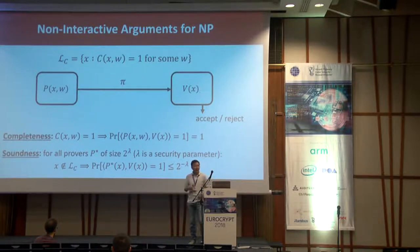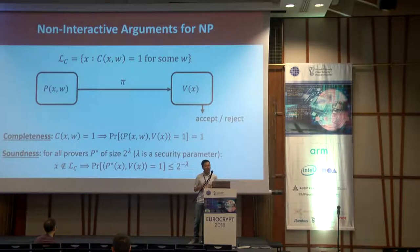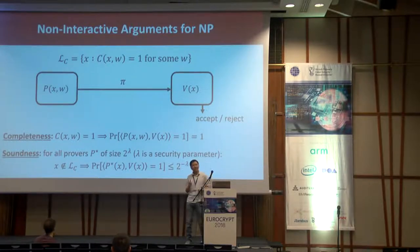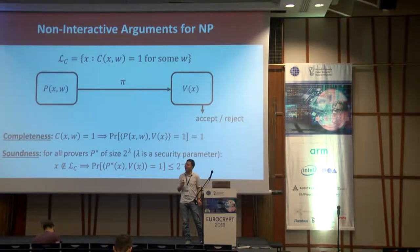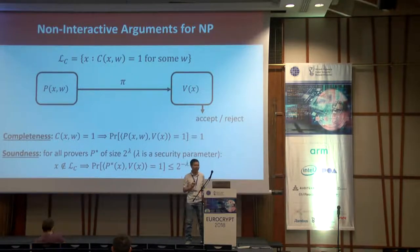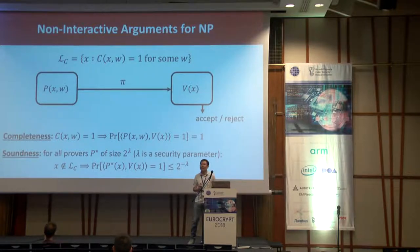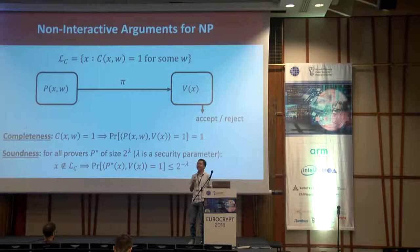Soundness intuitively says that a computationally bounded prover should only be able to convince an honest verifier of a false statement with small probability. To be concrete in this talk, we focus on the following definition of soundness: a prover modeled by a Boolean circuit of size 2^λ, where λ is a security parameter, should only be able to convince an honest verifier of a false statement with probability that is inverse exponential in the security parameter.